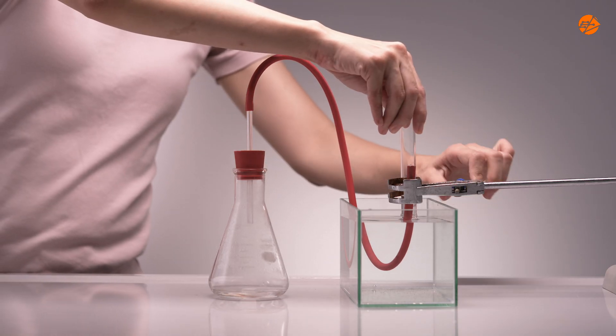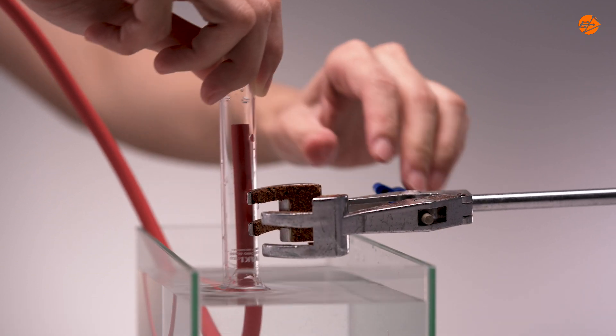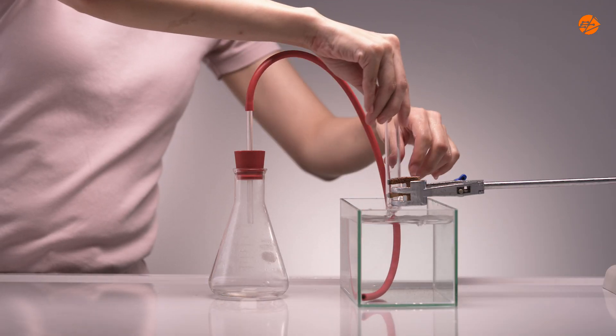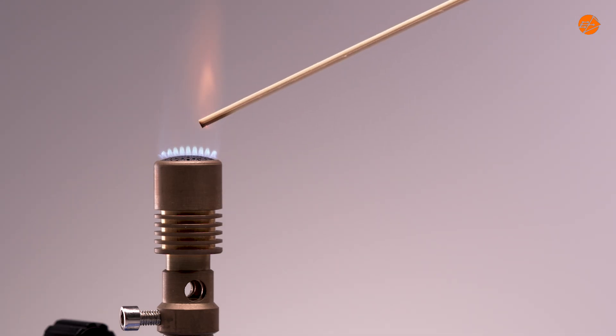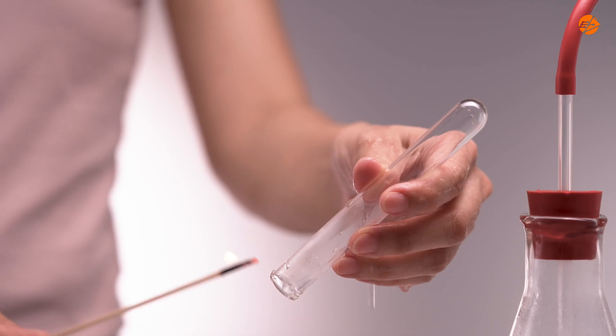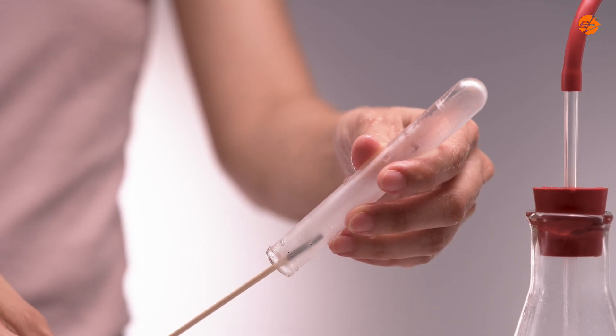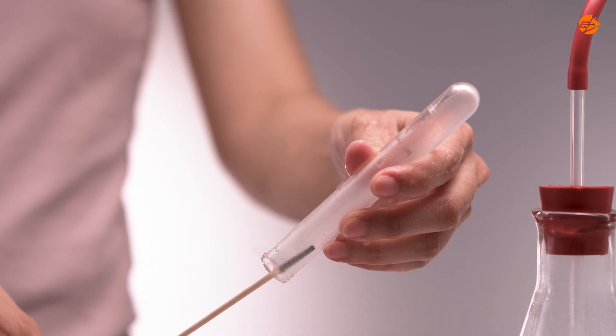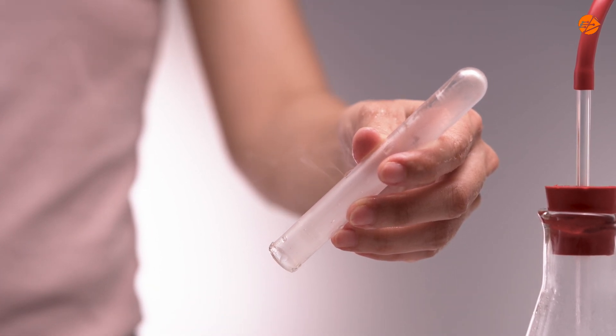After the collection is complete, remove the test tube and prepare a lighted splint. When brought near the mouth of the test tube, the lighted splint extinguishes with a pop sound, confirming the presence of hydrogen.